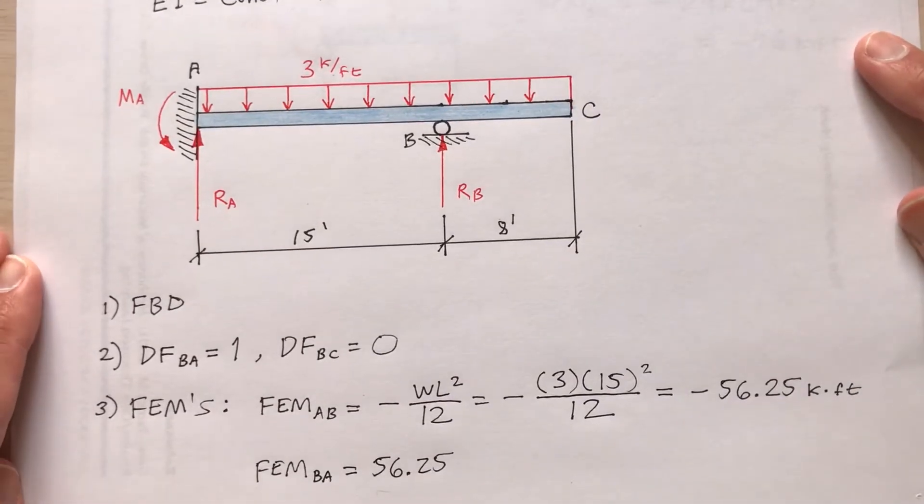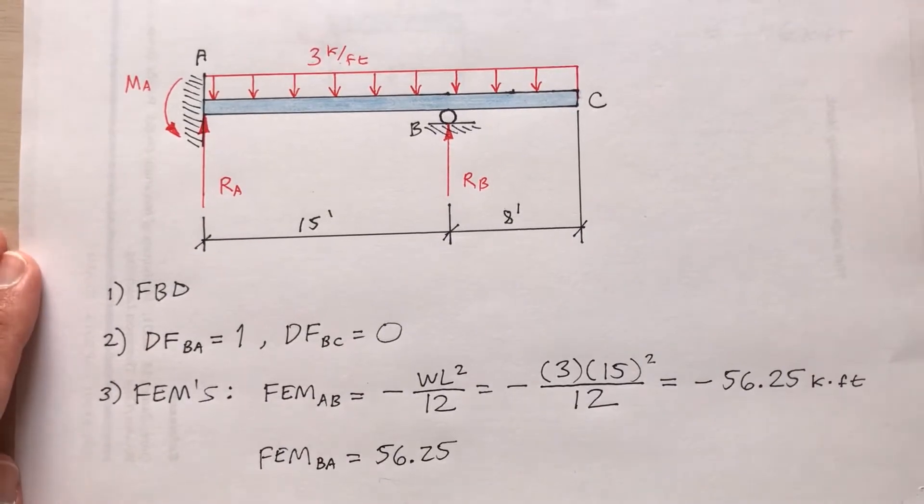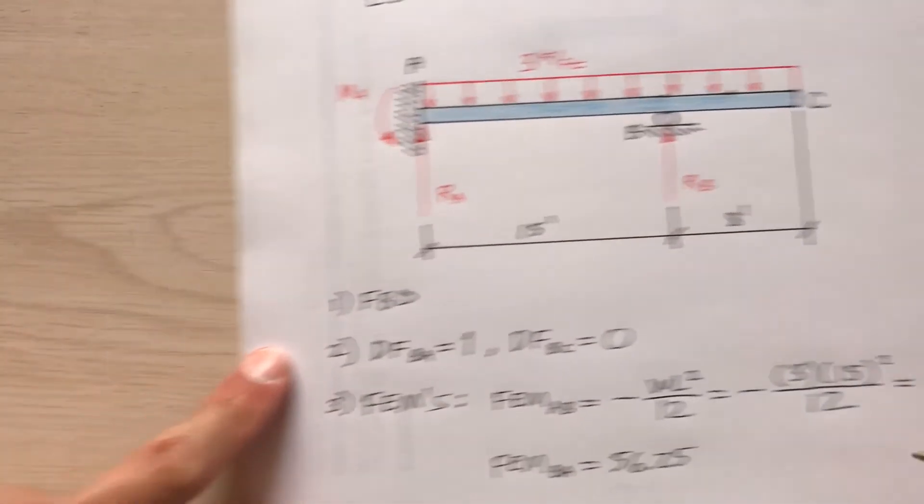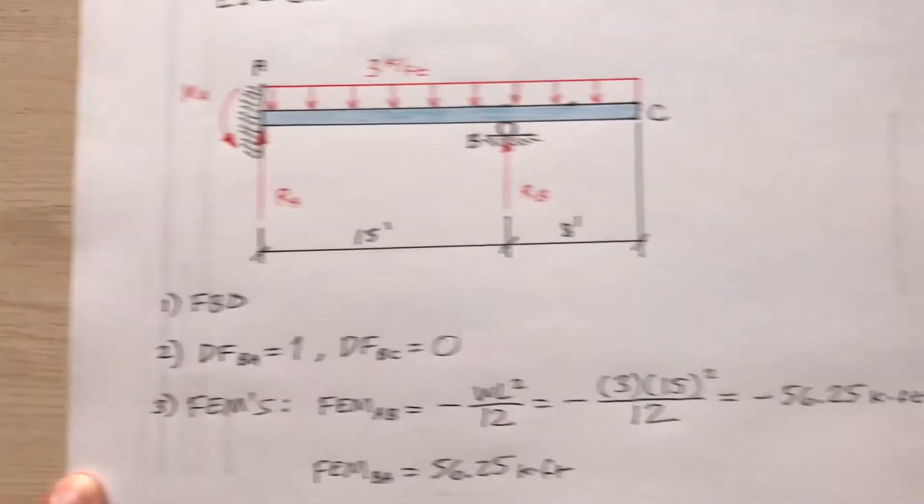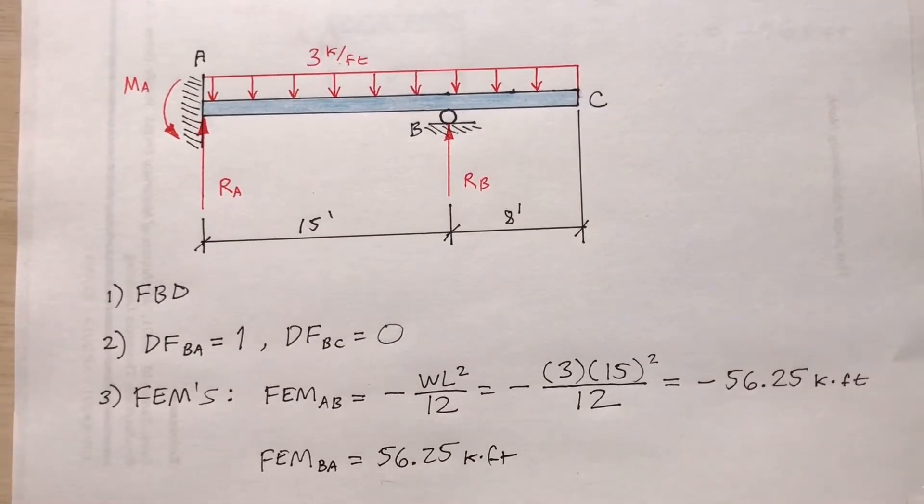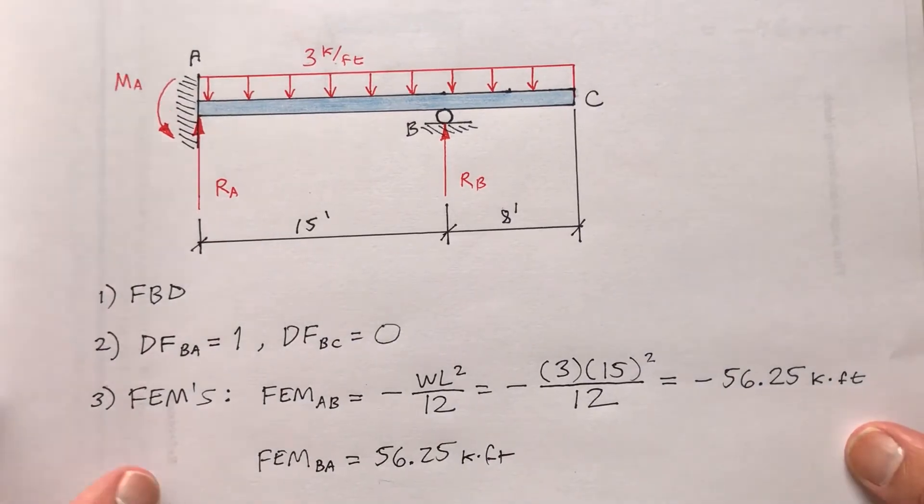So negative 56 and a quarter kip-foot. Those are the fixed end moments for AB and BA.